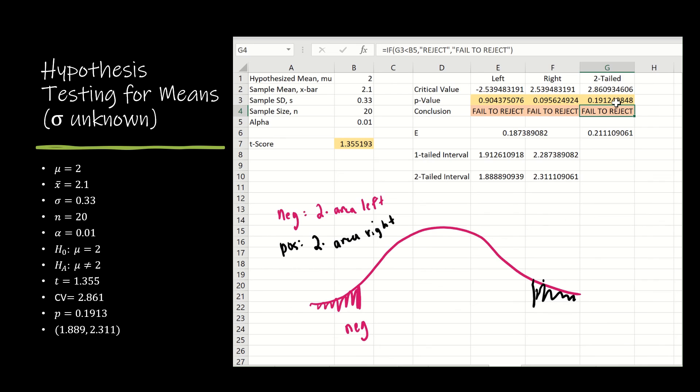I'm using the same if then for the conclusion, if P is less than alpha, reject, otherwise fail to reject. And then of course, I'm using the margin of error that comes from taking this critical value, multiplied by the standard deviation divided by the square root of n.